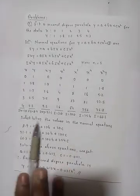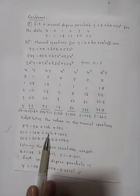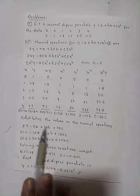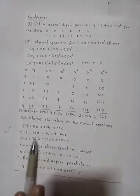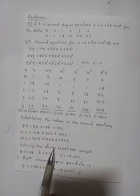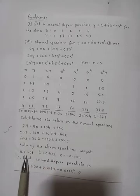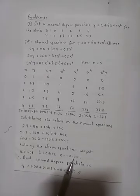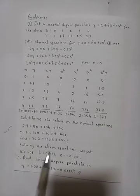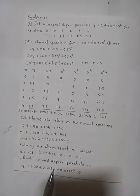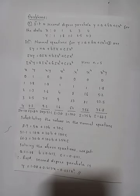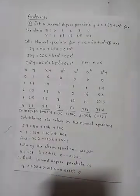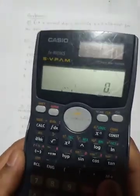We take the summations of all columns, substitute all these values into the normal equations, and solve those equations using a calculator. We get the values of the constants: a equal to 1.08, b equal to 0.413, c equal to minus 0.021. Substituting these values into the given equation gives us the required second degree parabola.